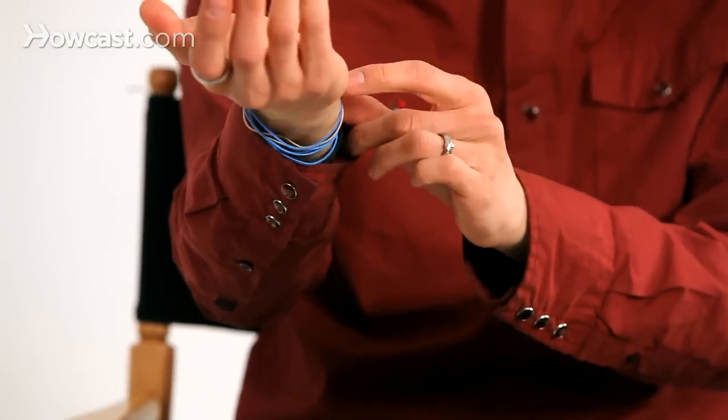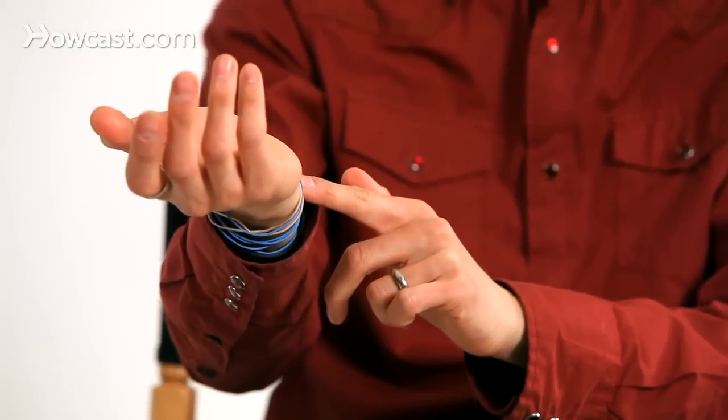Basically, what you need are a bunch of rubber bands, preferably size 19. These are a perfect size for them, and make sure they're the same color. This is something called the camouflage principle. Basically there's a bunch of rubber bands on your wrist.